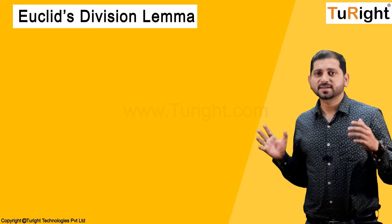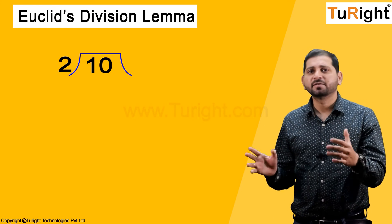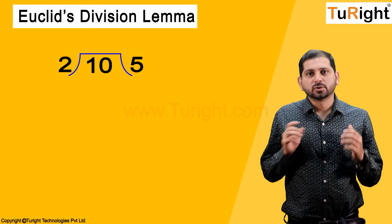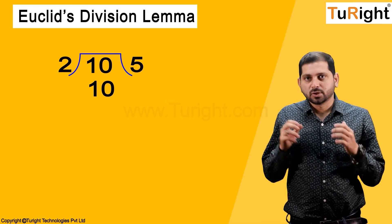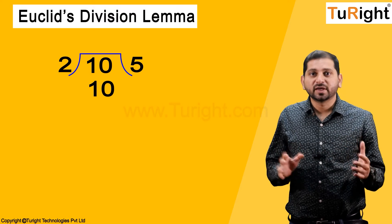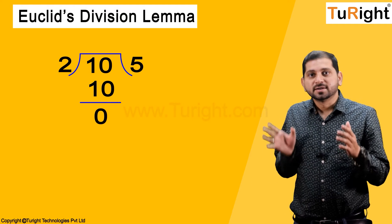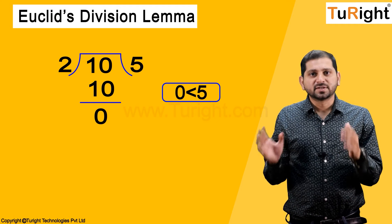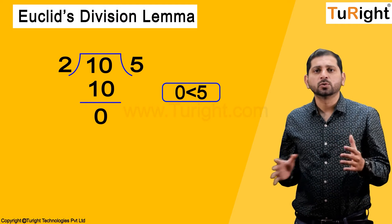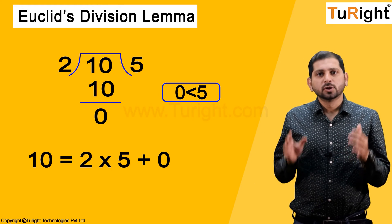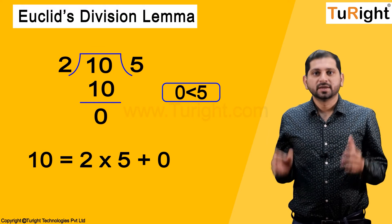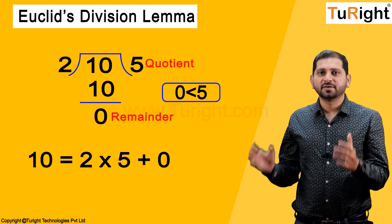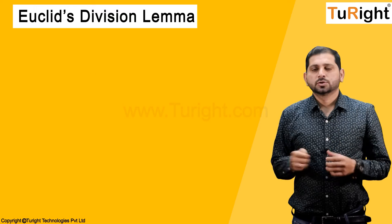Let us consider one more example: 10 divided by 2. 2 × 5 = 10, so 10 minus 10 gives a remainder of 0. According to the division rule: 10 = 2 × 5 + 0. Here, 0 is the remainder, 5 is the quotient, 10 is the dividend, and 2 is the divisor.